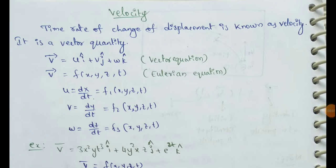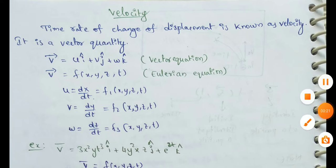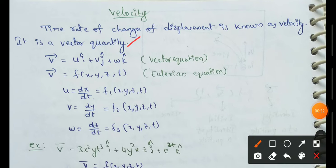Next topic: velocity. Velocity means rate of change of displacement. We are going to discuss the velocity parameters. The time rate of change of displacement is known as velocity. Velocity is a vector quantity.